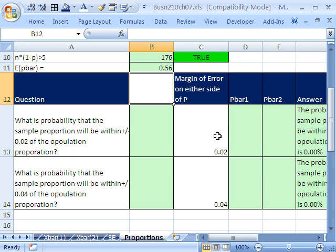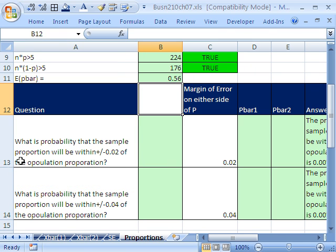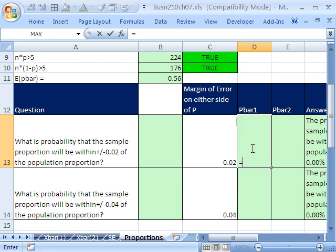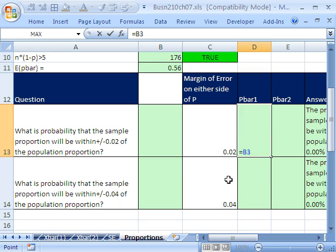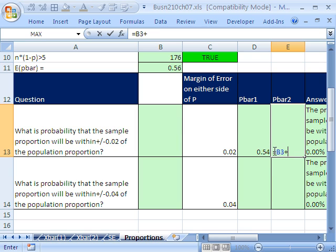Our question is going to be, within 0.02 above and below and 0.04 above and below, we want to calculate the probability. Here's the question: What is the probability that the sample proportion will be within plus or minus 0.02 of the population proportion? First, we have to calculate p bar 1 and p bar 2. We take our mean up here, and for this lower one minus, I'm going to lock this with f4, minus that. And then equals and I'll go up and get my proportion. Plus, I want to lock this. I'll put my cursor there and f4.